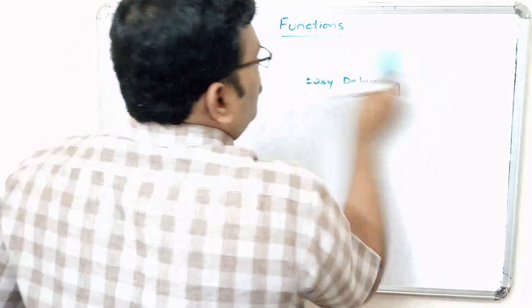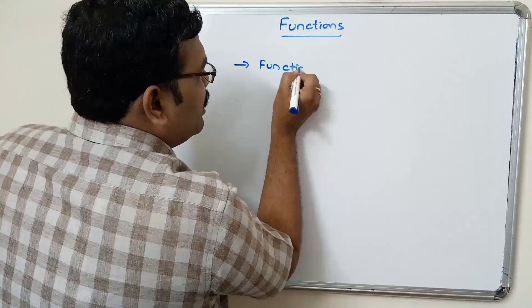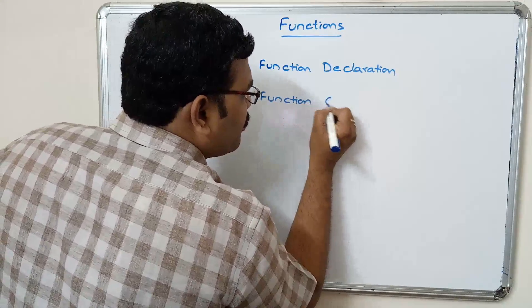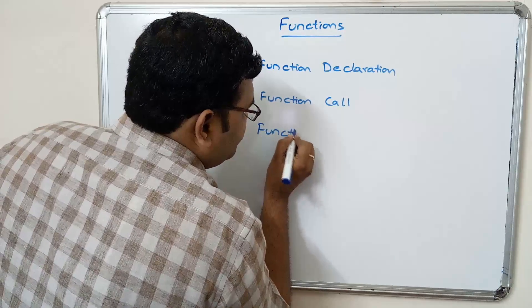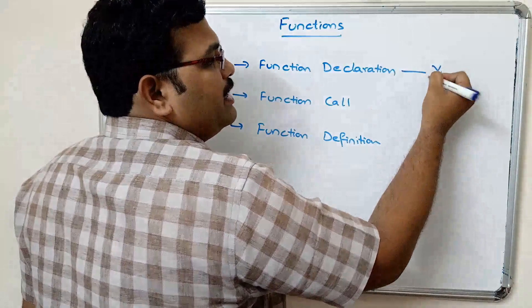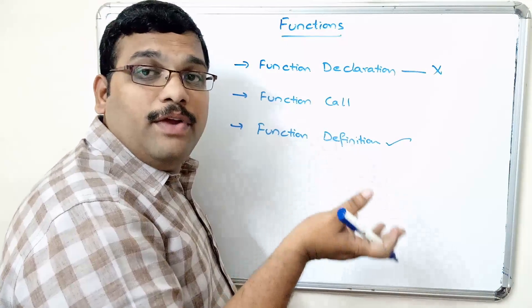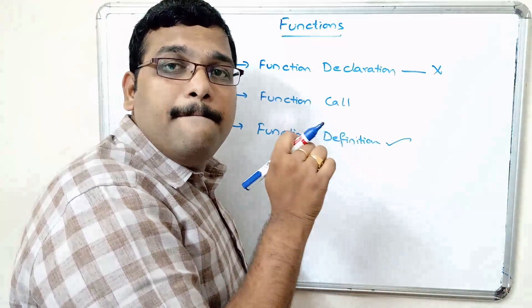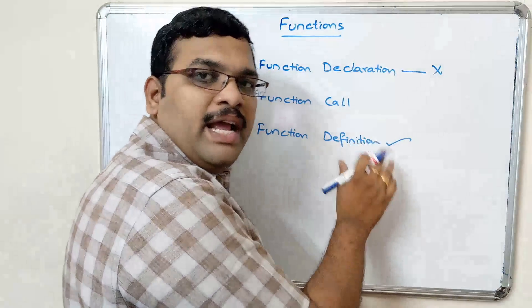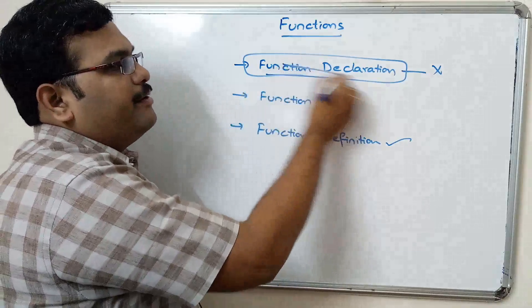Similar to C language, we have seen function declaration, function call, and function definition. Here in Python we can avoid the declaration. First we write the function definition, then we write the actual program. We are not writing a main function — instead I'm referring to it as the actual program. So function declaration is not needed in Python programming.